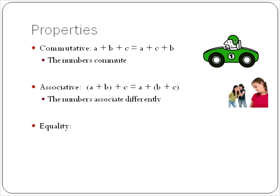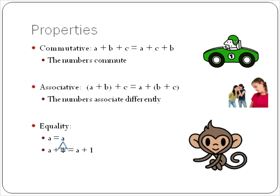And the property of equality is whatever you have on one side of the equal sign, you have on the other. So in this case, we added one. We had A equals A. We added one to the left side. We added one to the right side. I've heard it called the monkey see, monkey do property. Whatever you do to one side, you do to the other.